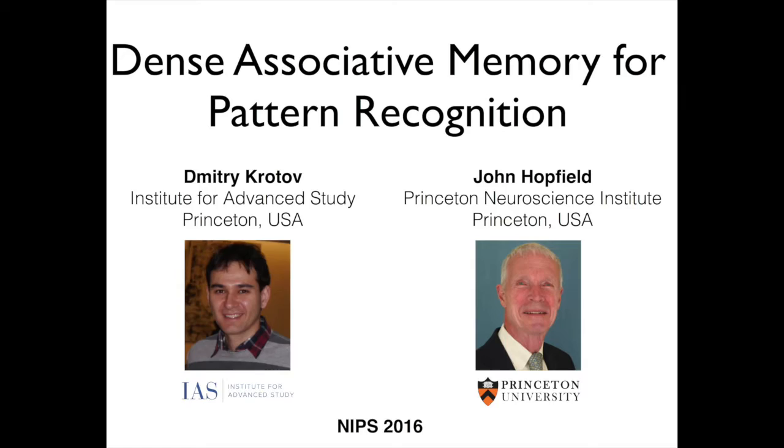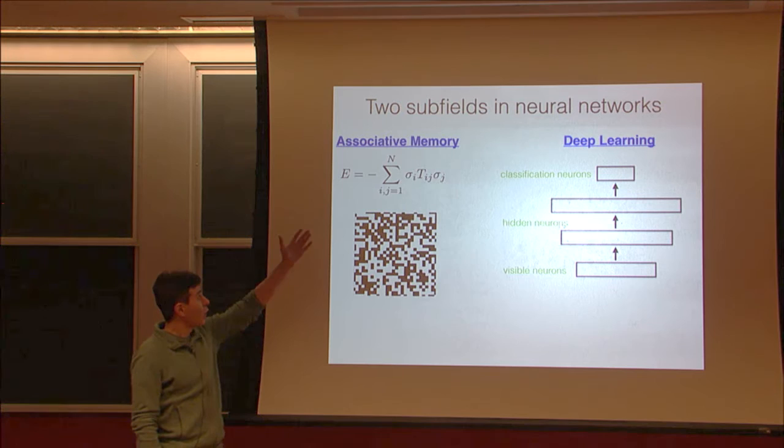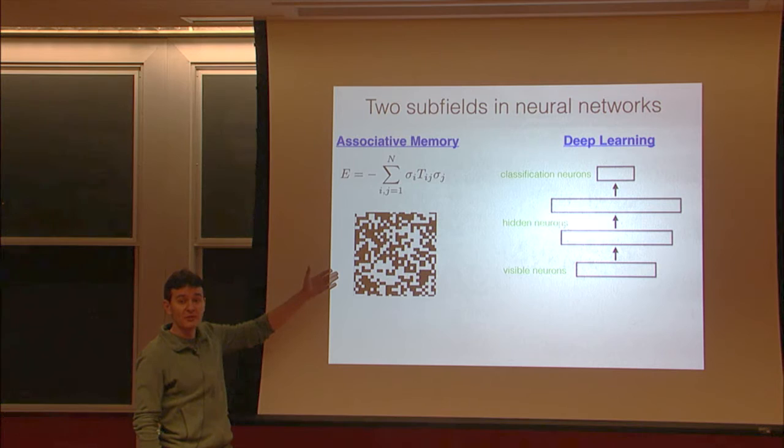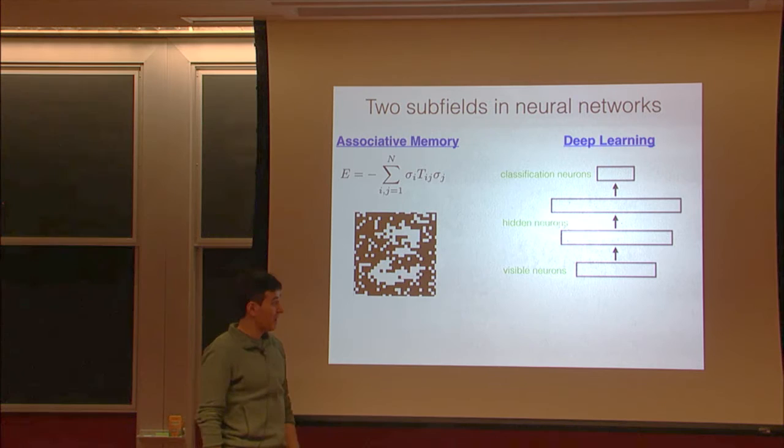The focus of the paper is the relationship between two subfields within the field of neural networks. One subfield is associative memory and the other is deep learning. Associative memory is defined by an energy function and a dynamical update rule which describes temporal evolution towards one of the attractor states. Each attractor corresponds to one of the memories.